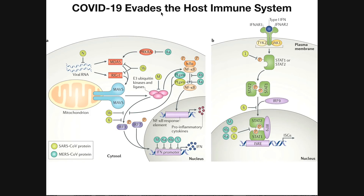The last thing we'll talk about is how SARS-CoV-2 evades the host immune system — fairly consistent across other strains of SARS-CoV or MERS-CoV. There are a bunch of proteins made by certain coronaviruses: the green ones represent SARS-CoV (our coronavirus of 2019), and the blue ones represent MERS-CoV. SARS-CoV generates proteins including N, 3B, M, and 6, among others. These proteins inhibit many natural processes required to produce inflammation.